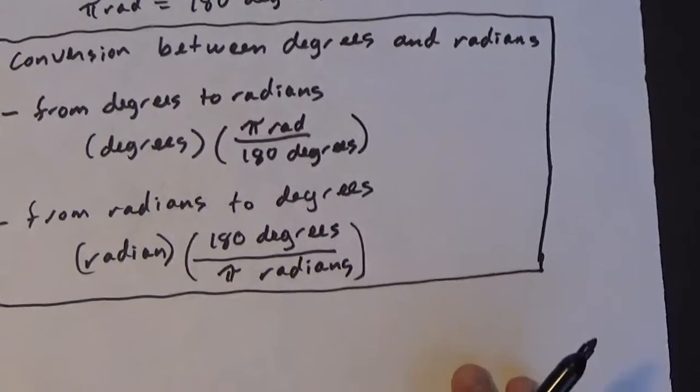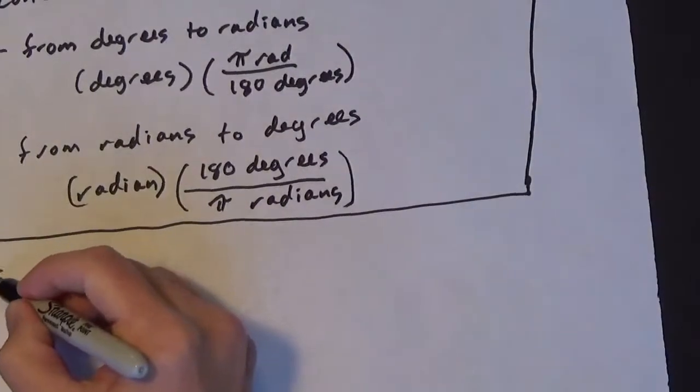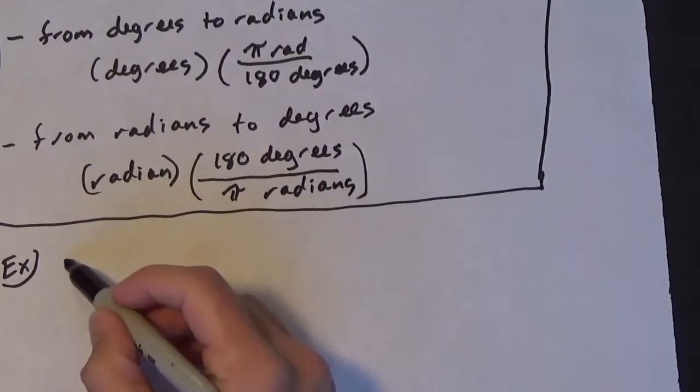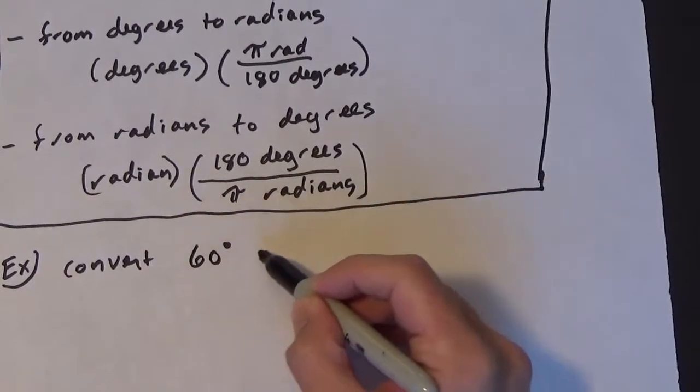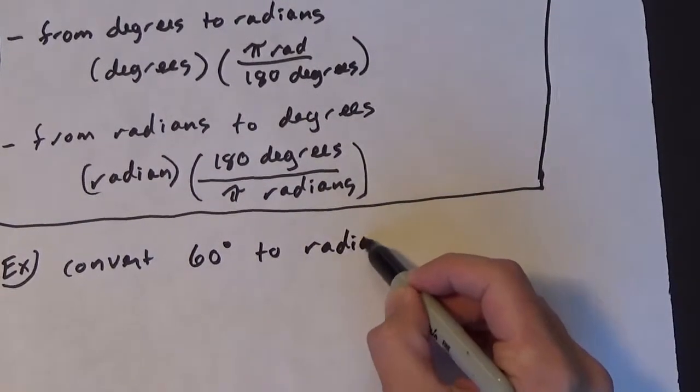So let's go ahead and look at this. Let's look at an example. So let's say we want to convert 60 degrees to radians.